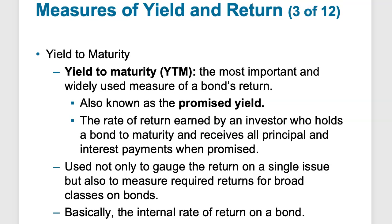Yield to maturity is more complex. If we're buying a 30-year bond in its 14th year, what is our yield to maturity? The bond may be selling at a discount, so we need to add that into our return if we hold it to maturity. Sometimes called the promised yield, it's the rate of return earned by an investor who holds the bond to maturity with principal paid back and interest payments made as promised. It gives a better picture of total return — essentially an internal rate of return for a bond.